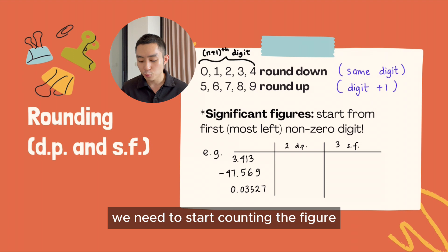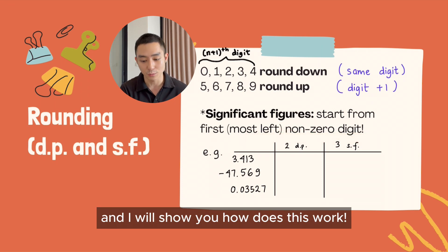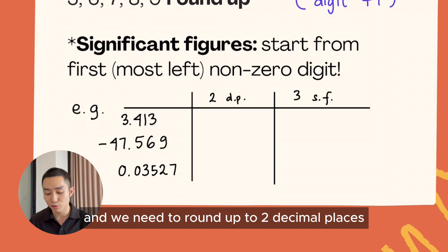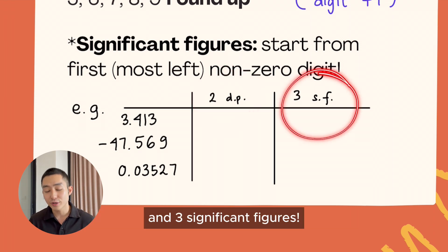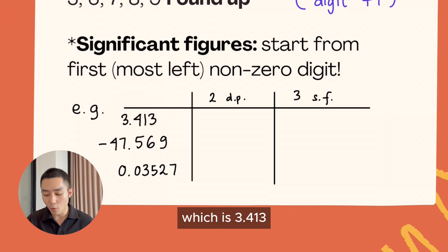For significant figures, we need to start counting the figure from the first most left non-zero digit, and I will show you how this works. Now, we already have several practice questions, and we need to round that to two decimal places and three significant figures. We can start with the first one, which is 3.413.